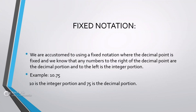Let us see an example. Here we have the number 10.75. The numbers on the right hand side of the decimal point, that is 7 and 5, are called the decimal portion of the number, and the numbers on the left hand side, that is 1 and 0, are called the integer portion.